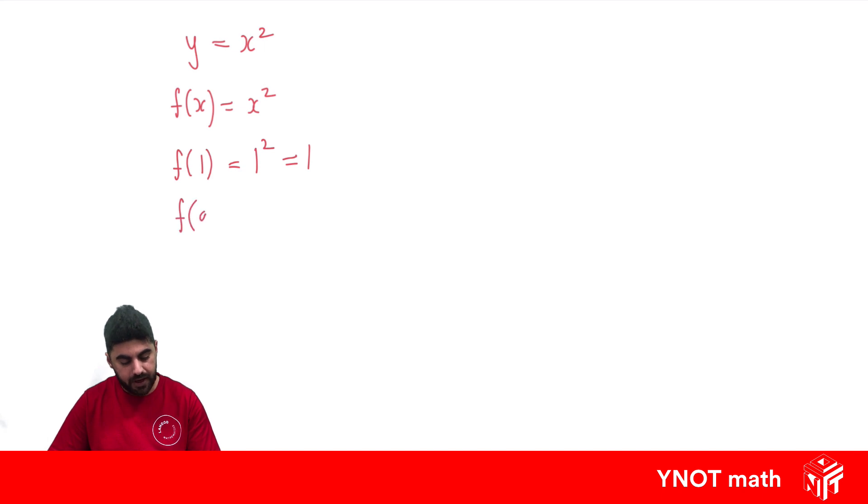The f(a), wherever I see x, I'm just substituting a, so it'd be a squared. If it was the f(x+h), wherever I see x, I'm replacing it with x+h. So it'd be x+h, all squared.